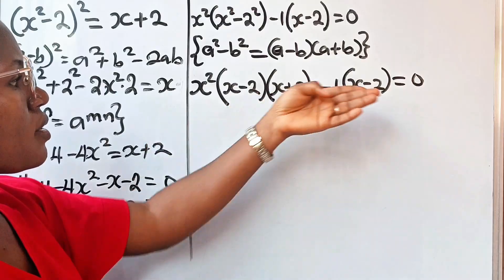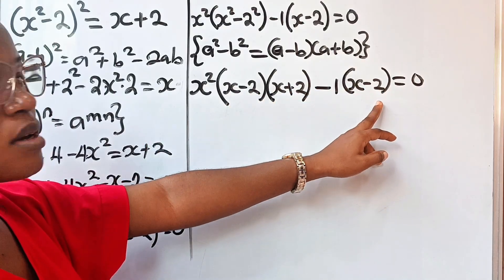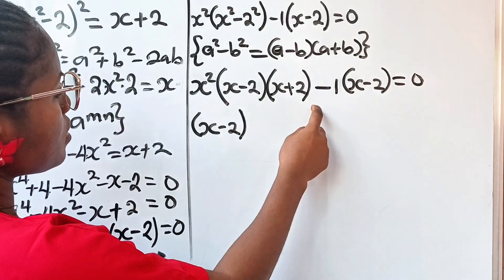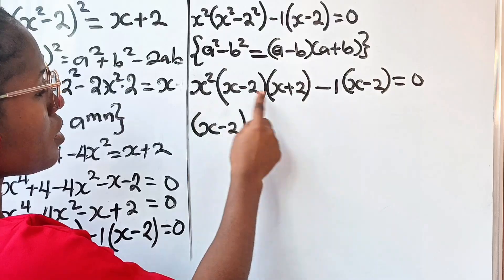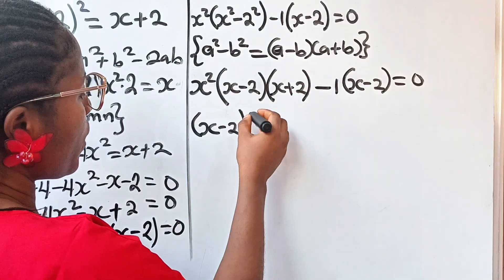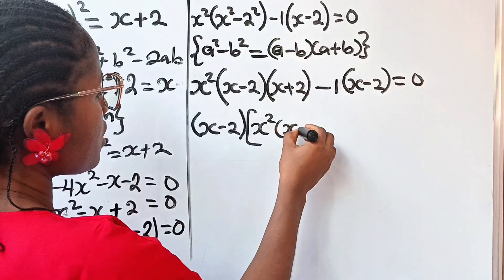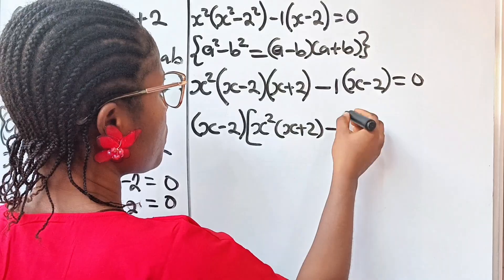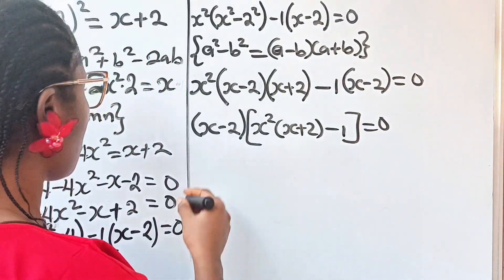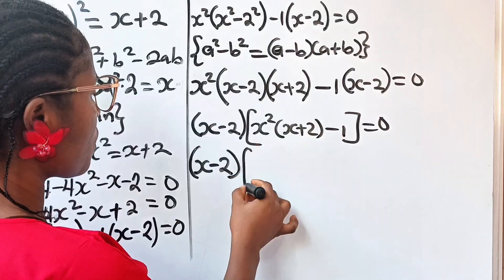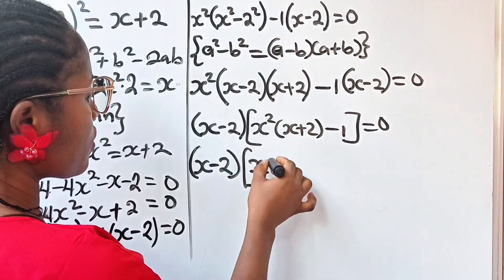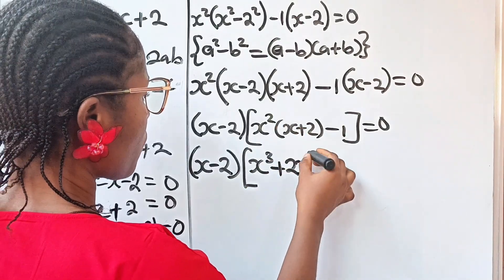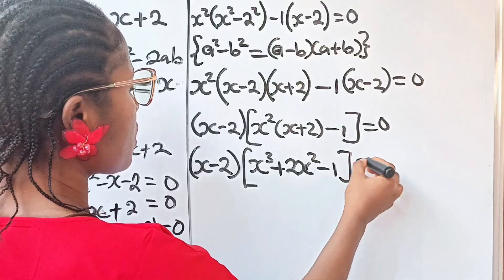Both terms have (x - 2) in common, so we factor that out: (x - 2)[x²(x + 2) - 1] = 0. Expanding the bracket: x² times x gives x³, and x² times 2 gives 2x², so we have (x - 2)(x³ + 2x² - 1) = 0.